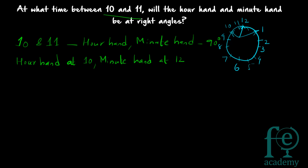The second option is that the minute hand can be at 7. When the minute hand is at 7, the hour hand and minute hand are also at right angles — again 15 minutes apart in the other direction: between 7–8, 8–9, and 9–10, each 5 minutes. So there are two options: minute hand at 1, or minute hand at 7.